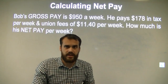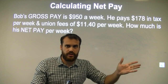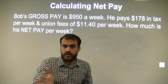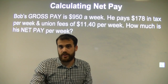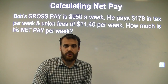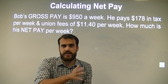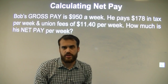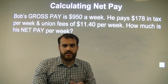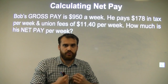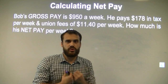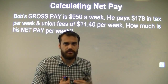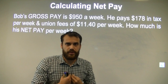You have to pay tax, so the tax will go to the government first. You also might have to pay union fees depending on what industry you're in. You might also need to pay some money to superannuation. There are also other things you might need to pay as well. Once the pay arrives in your hand after all of those deductions have been made, that's called your net pay.